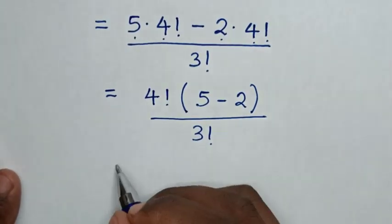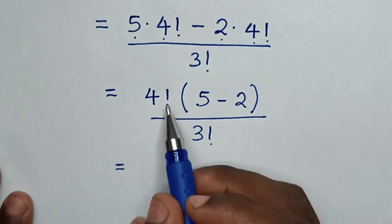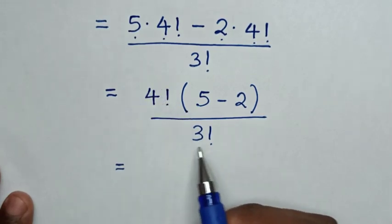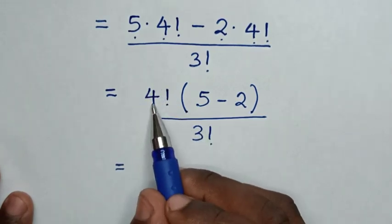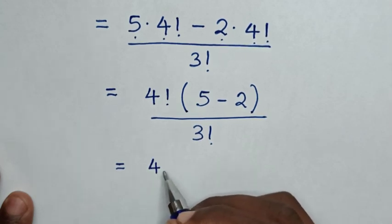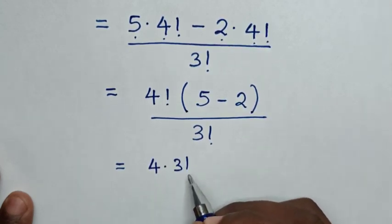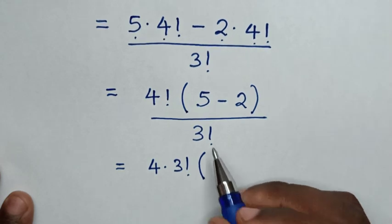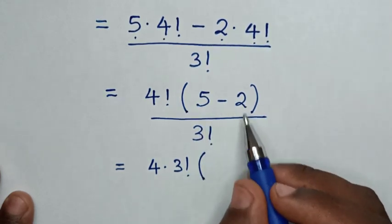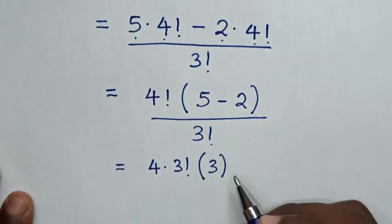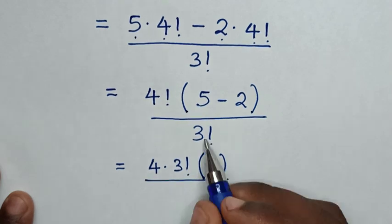Then it will be equal to - in here 4 factorial we make to have 3 factorial. So this is same as 4 times 3 factorial, then bracket 5, 5 minus 2 is 3, then over 3 factorial.